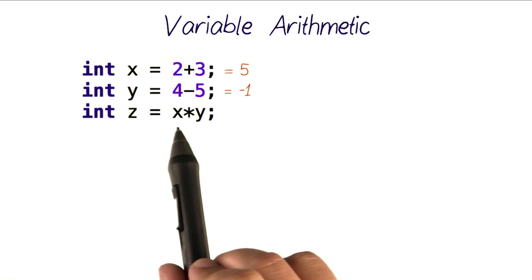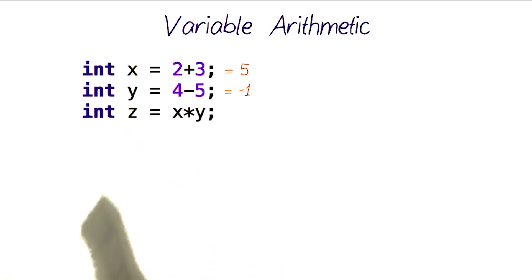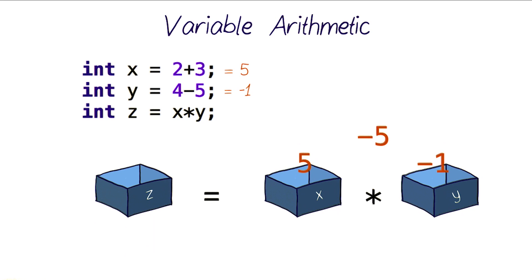Now we can actually multiply those two variables, x and y, and store the result in z. What this would do is it would multiply the values stored inside those two variables, and put the result of that multiplication into the variable z, storing the value negative 5 into the variable z.